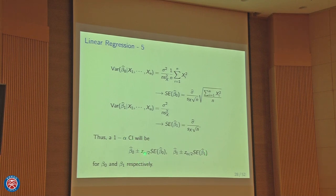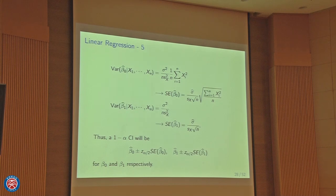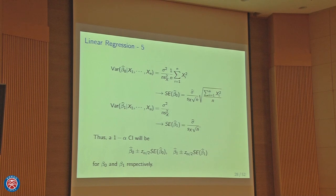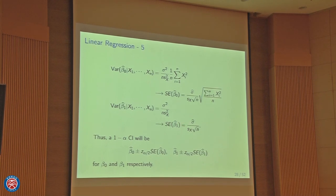The least squares approach finds the beta minimizing the L2 norm squared of Y - X*beta. The closed-form solution is beta-hat = (X^T X)^{-1} X^T Y. The good news is that, like the univariate case, the estimator is approximately normally distributed centered at the true parameter, allowing closed-form confidence intervals for each coefficient. In R, when you fit a linear model, confidence intervals are automatically constructed.